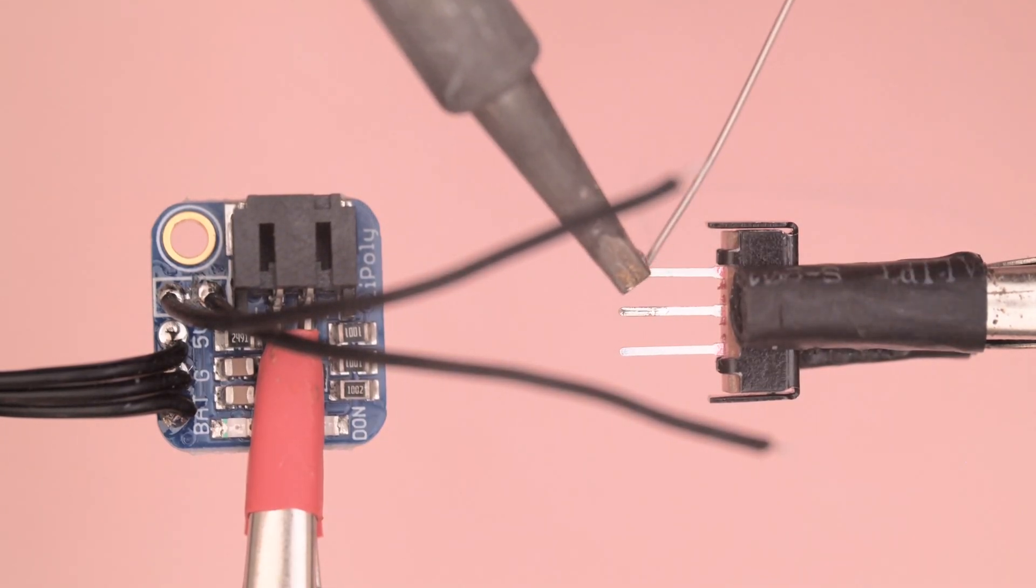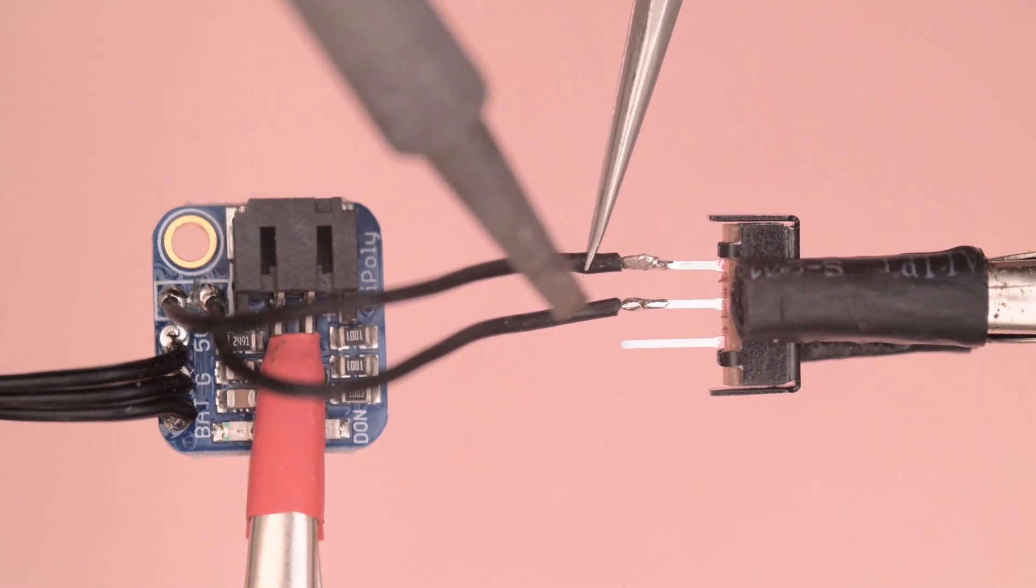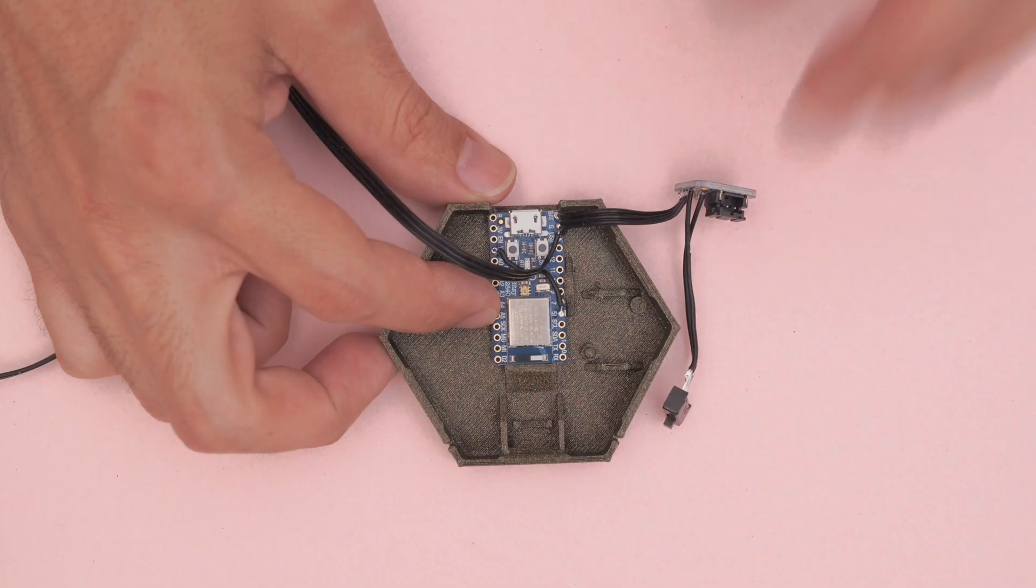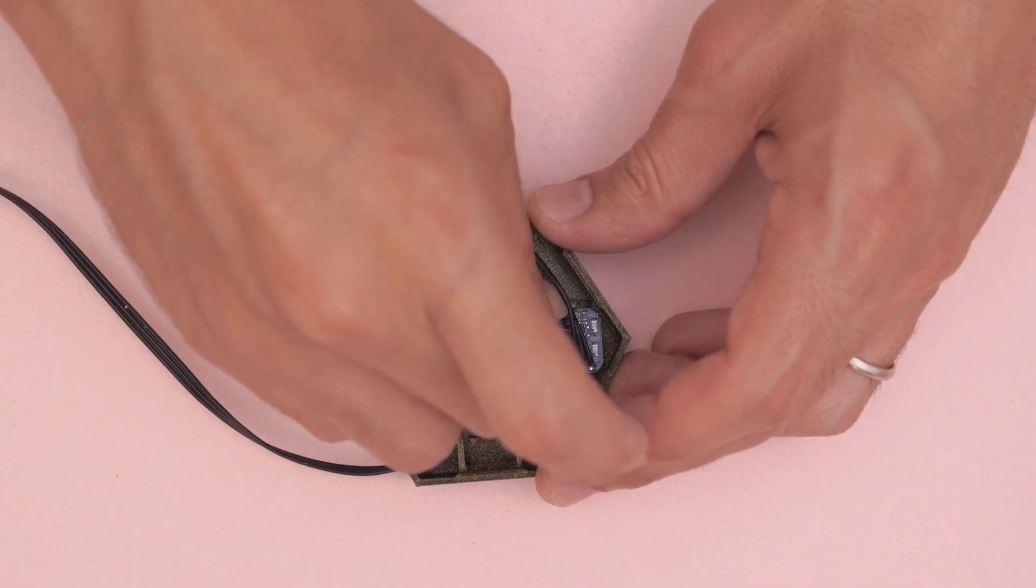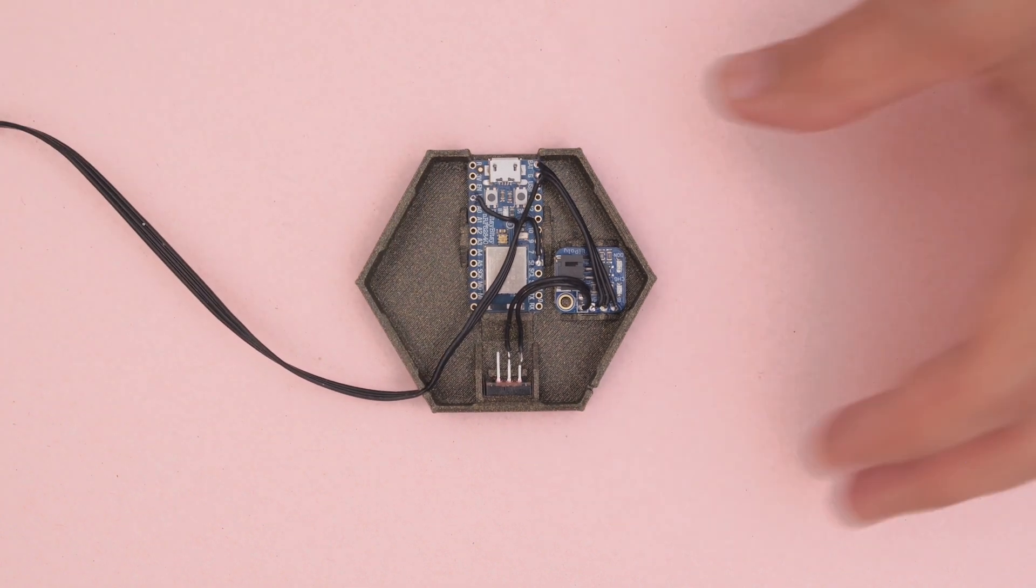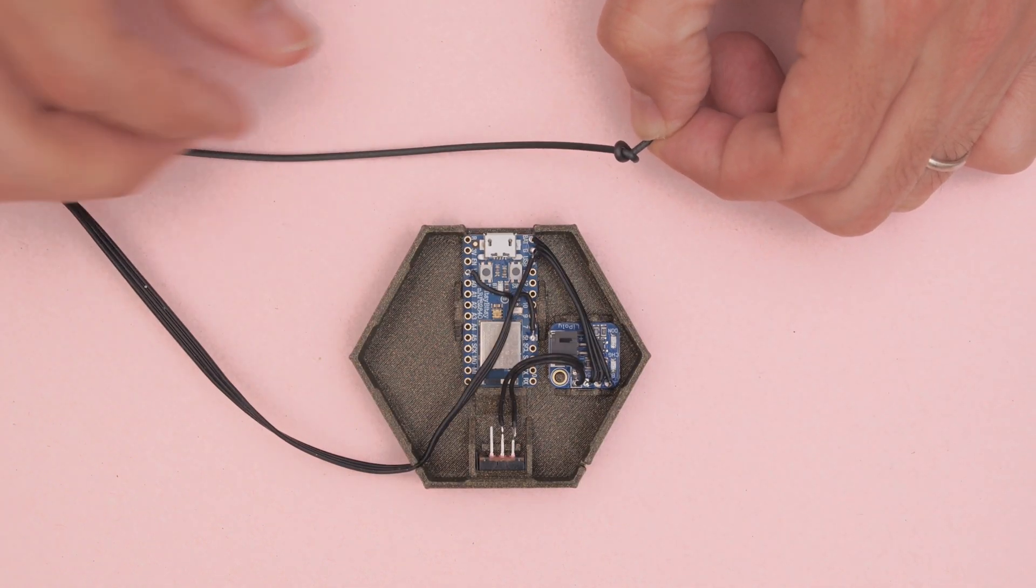You'll want to tin the leads on the slide switch with a bit of solder. Solder the wires to the middle pin and either the far left or right. The Itsy Bitsy board snap fits into the case and is held in place with tabs. The LiPo backpack is press fitted into place and the slide switch fits into a little built-in holder. A piece of NinjaFlex can be used to create the second strap to form our necklace.